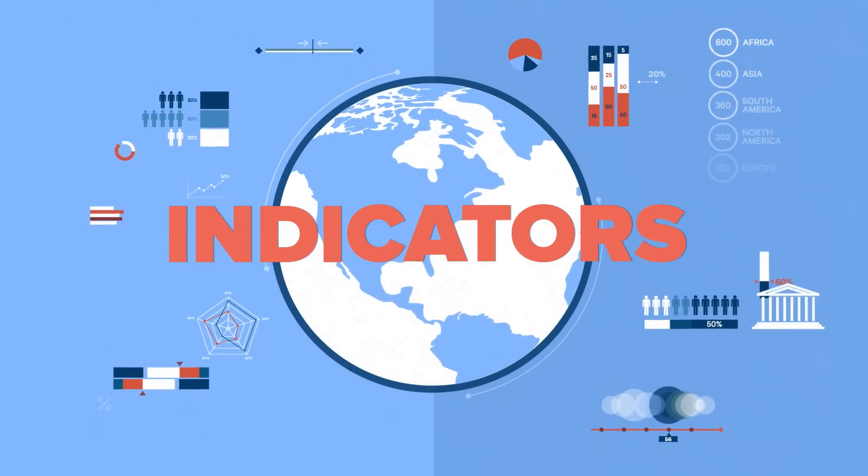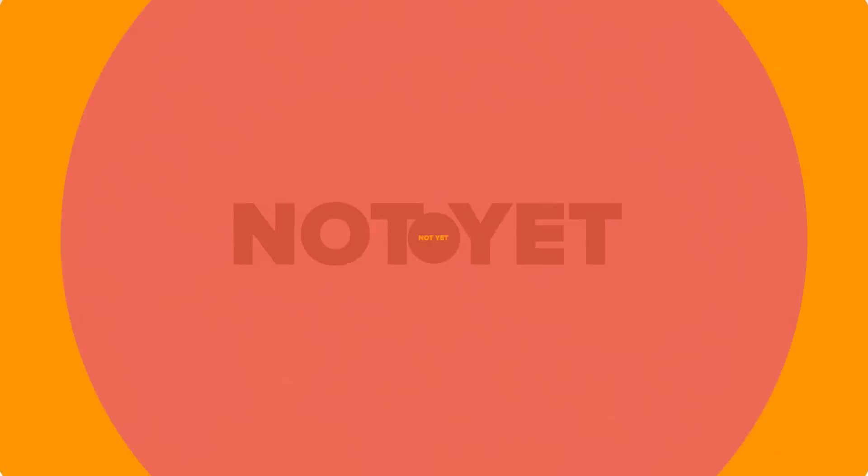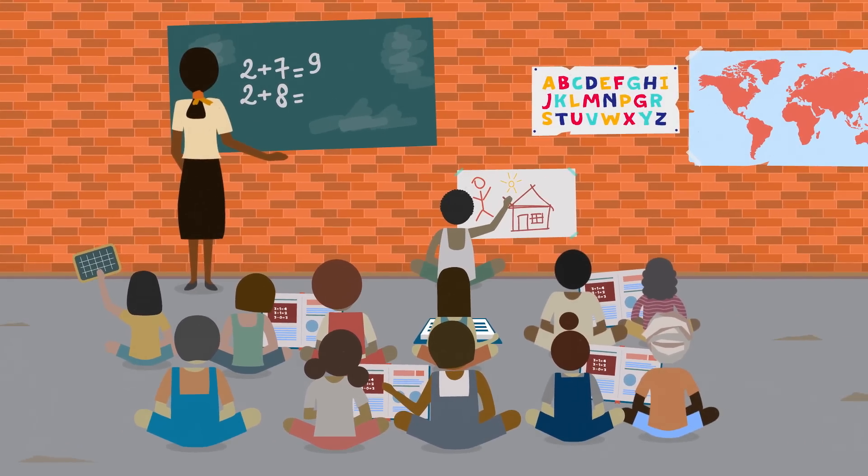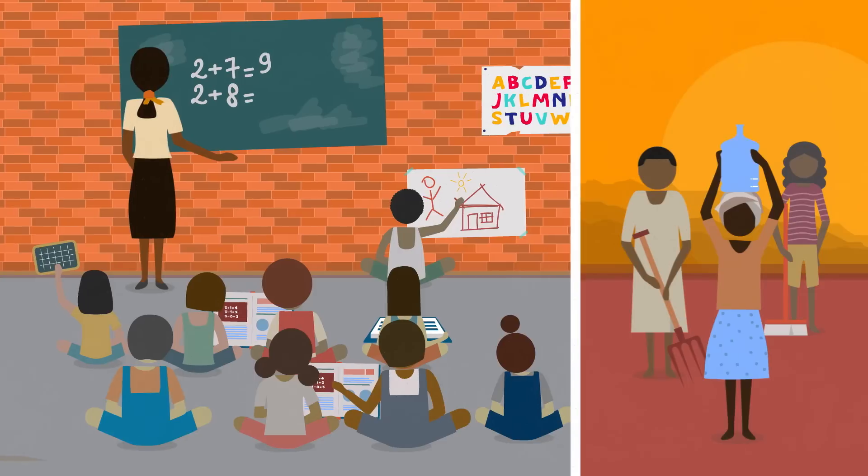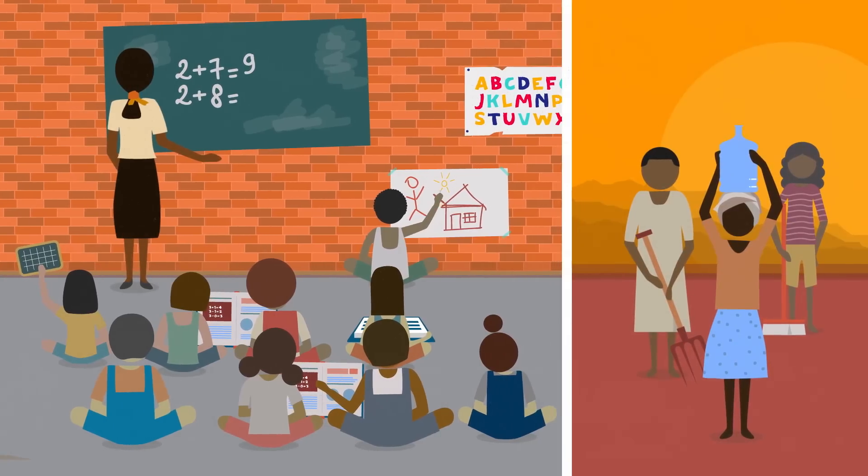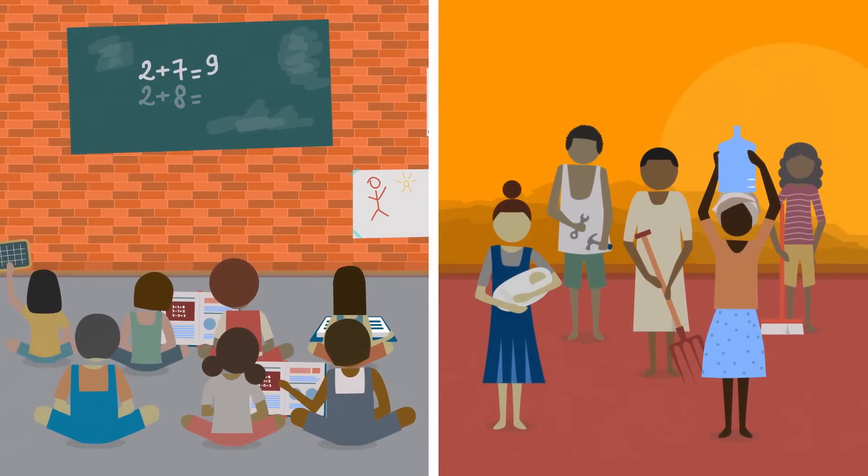But does this mean our work is done? Not yet. Data show successes and failures. Roughly one quarter of children who enroll in primary school drop out. Of those who stay, many are not learning at the appropriate grade level.